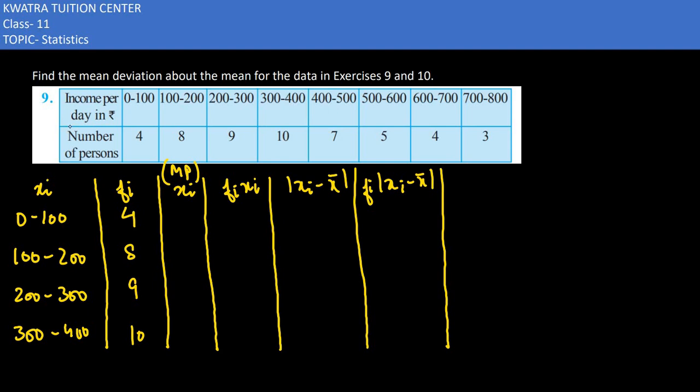So here in the 9th one it says find the mean deviation about the mean for the data given to you. Now 0-100 income is 4, 100-200 is 8, so what do we need to find for this data?